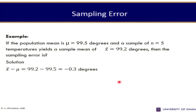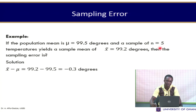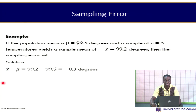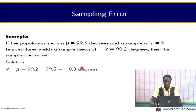Another example: if the population mean is mu equals 99.5 degrees, and a sample of n equals 5 temperatures yields a sample mean of x-bar equals 99.2 degrees, what is the value of the sampling error? The sampling error is computed by taking the difference between the sample statistic and the population parameter. Therefore, we have 99.2 minus 99.5, which gives us negative 0.3 degrees. So the magnitude of the error is 0.3 degrees.